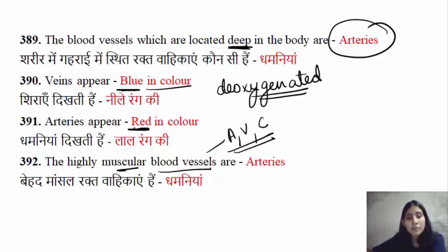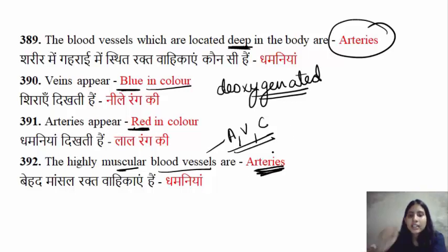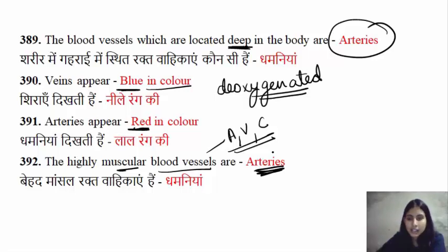Highly muscular blood vessels are the arteries. Arteries have more muscle layers compared to veins and capillaries.